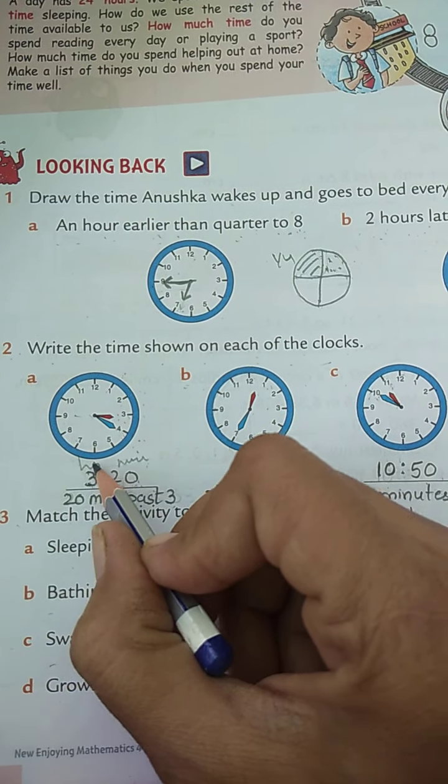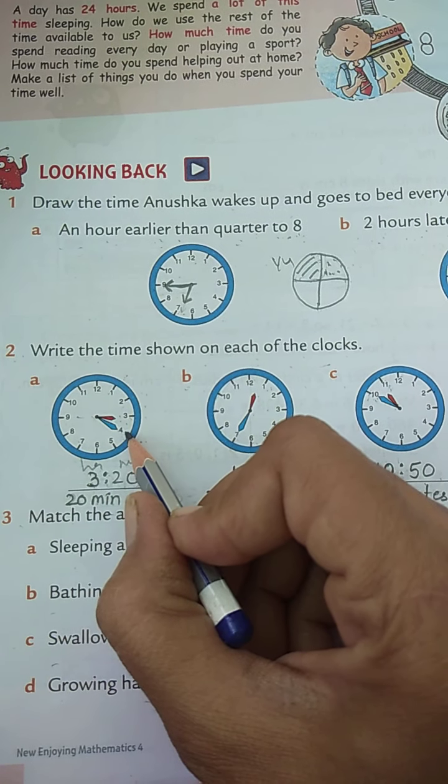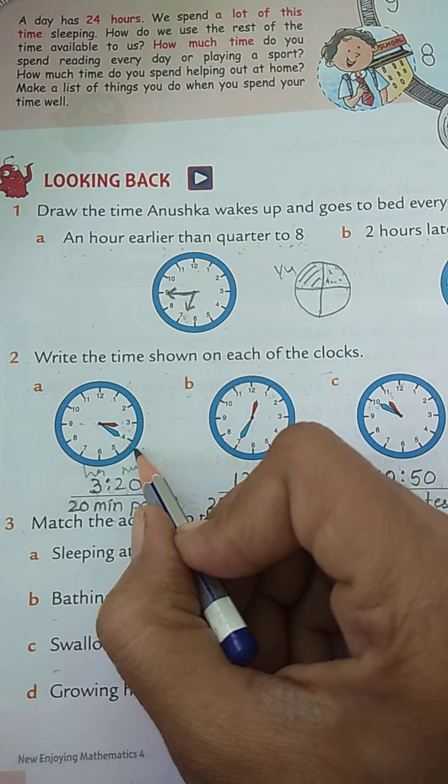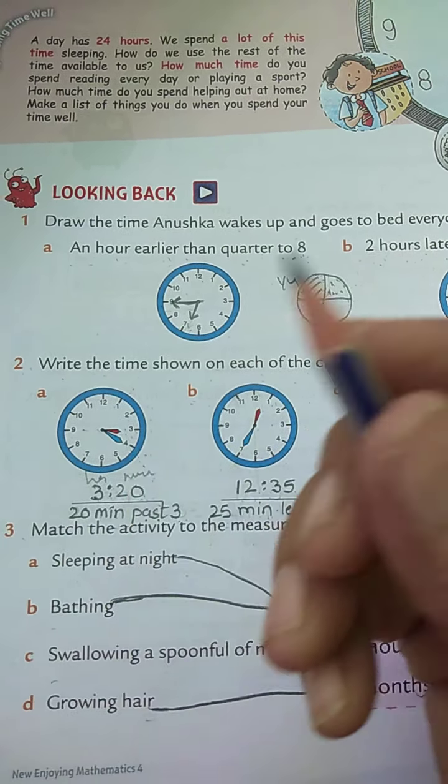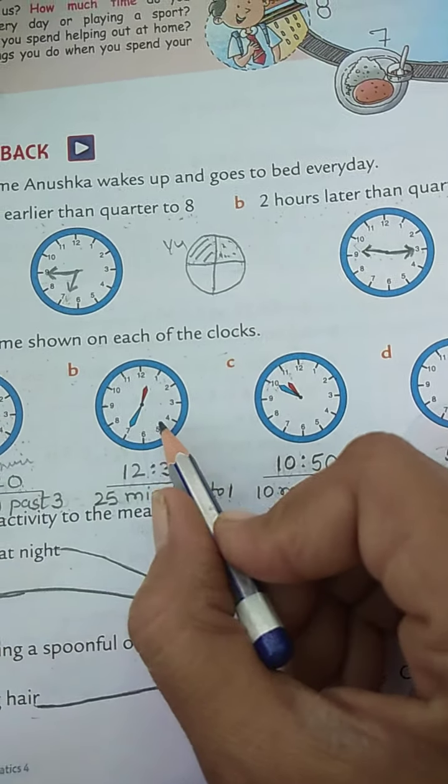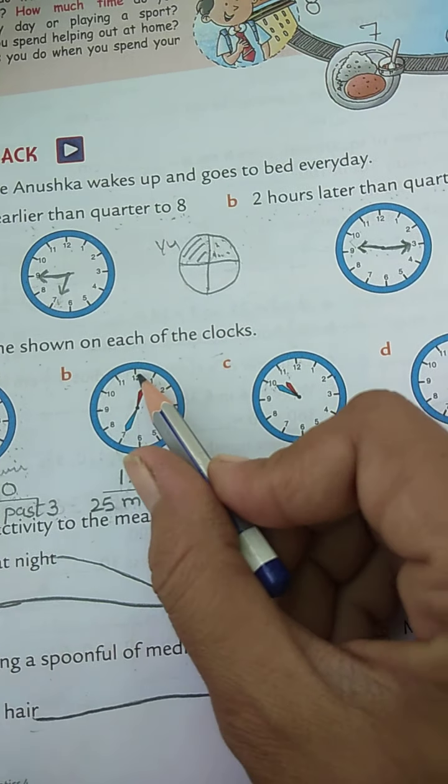So three hours twenty minutes is the time shown here. The another way to write this time is twenty minutes past three. Three o'clock already passed and twenty minutes happen.